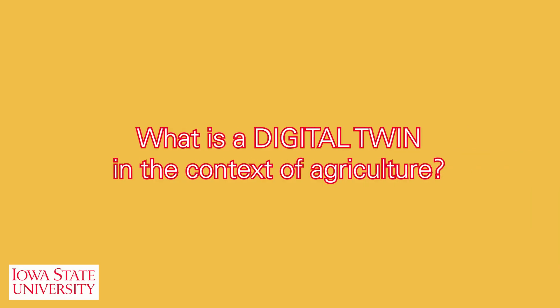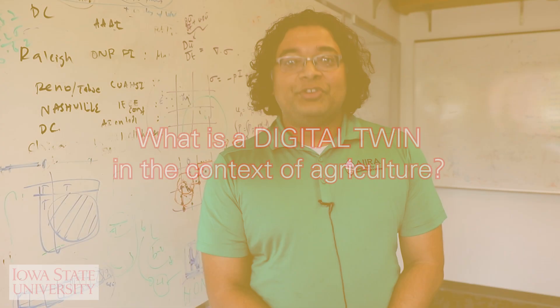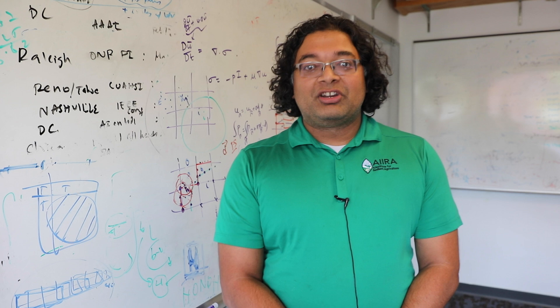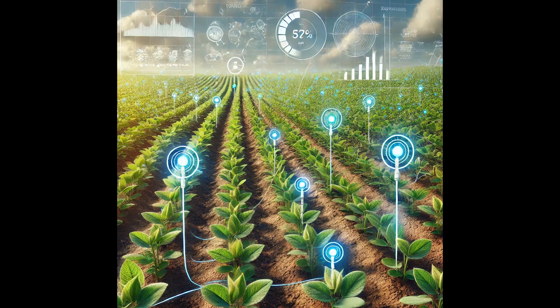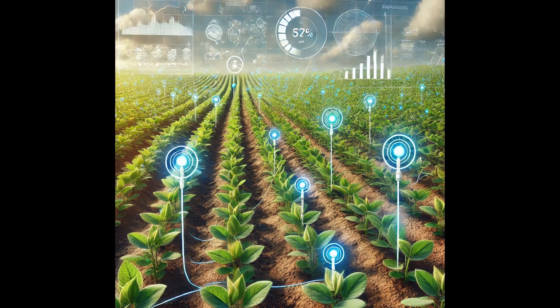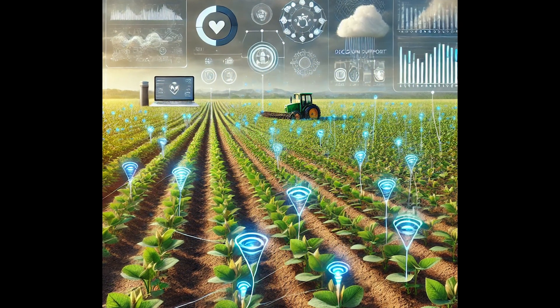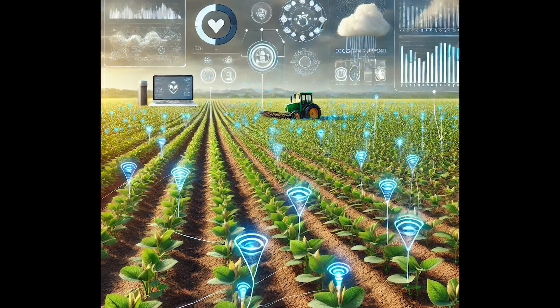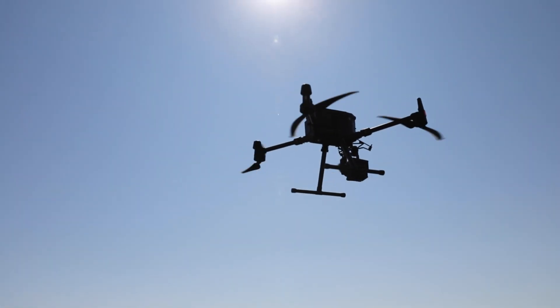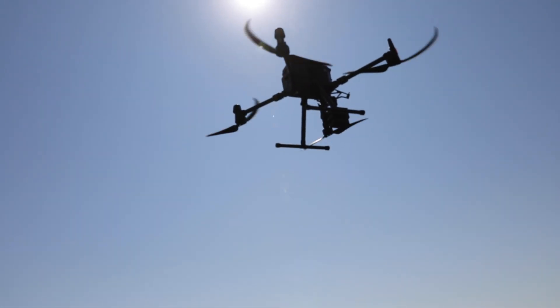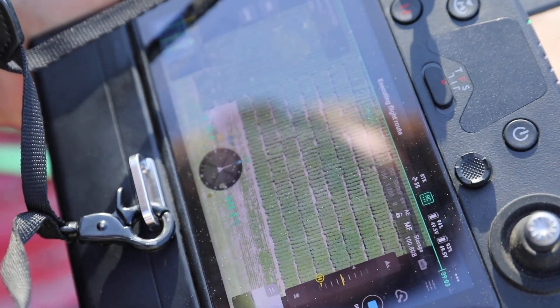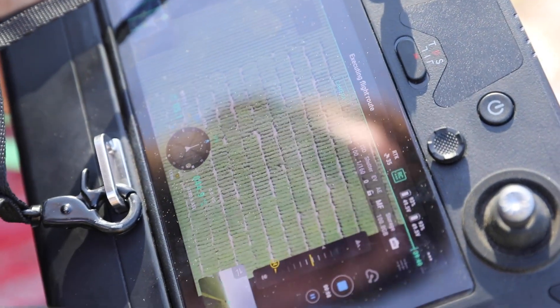A digital twin is essentially a virtual replica of a physical object. In the context of agriculture, it's essentially a mathematical model that accepts a lot of streaming data about a plant, a field, or a farm, and builds a virtual representation of this particular physical object. These digital twins essentially mimic the behavior and operations of the plant, or the plot, or the field, or the farm.